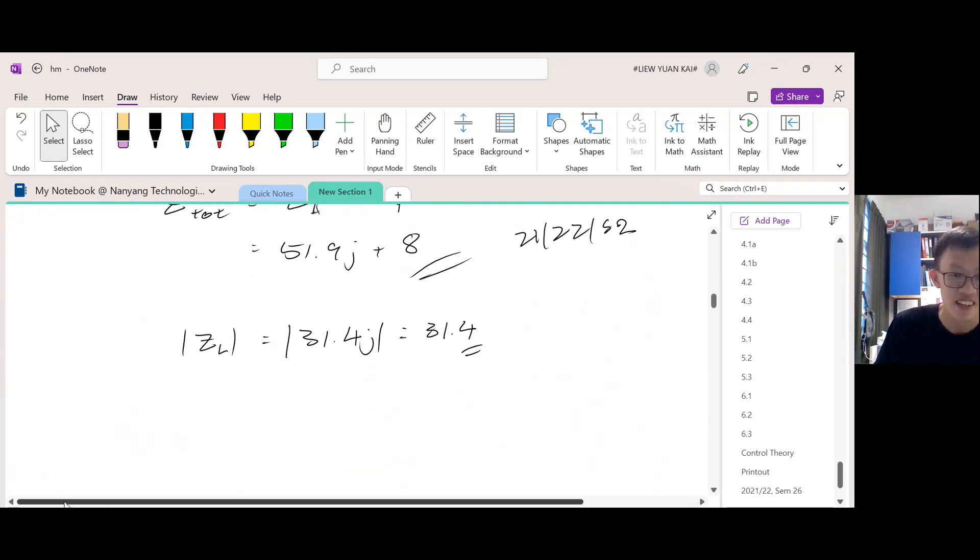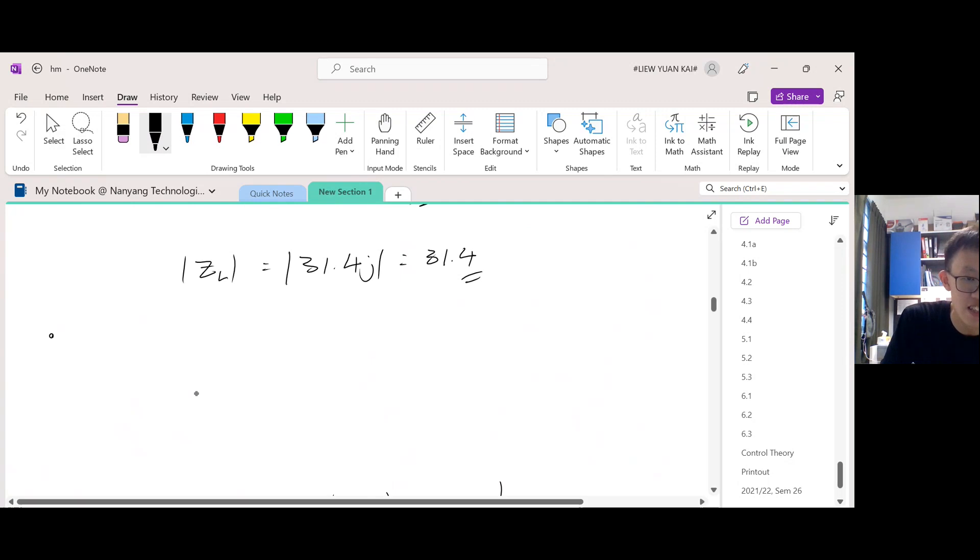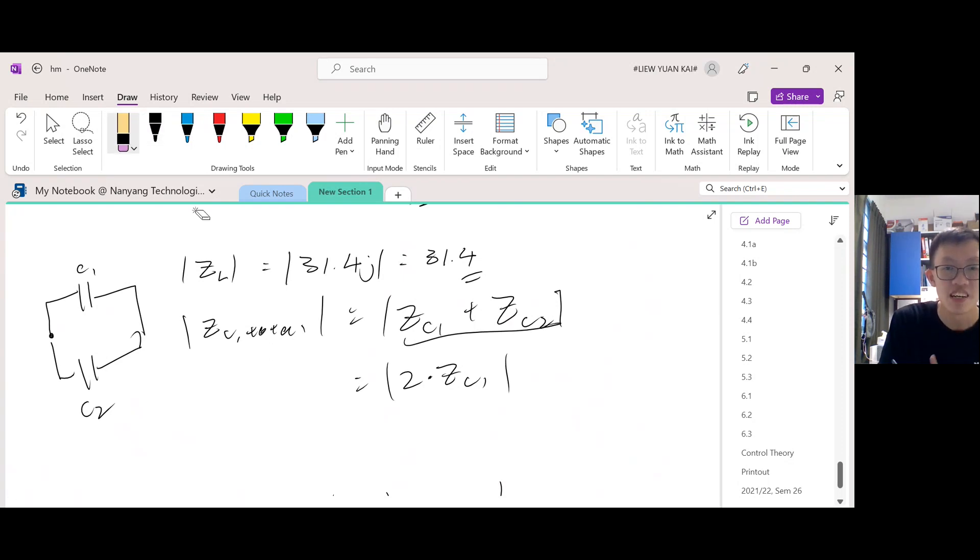Notice that the capacitors are parallel, right? So this is C1 and this is C2. The mistake that I made was this: what I did was Z_C1 plus Z_C2, which is why I did two times Z_C1, because the capacitance are the same. I just added them together like this. But this is not true. Why? Because this is the formula for impedance in series, not in parallel.